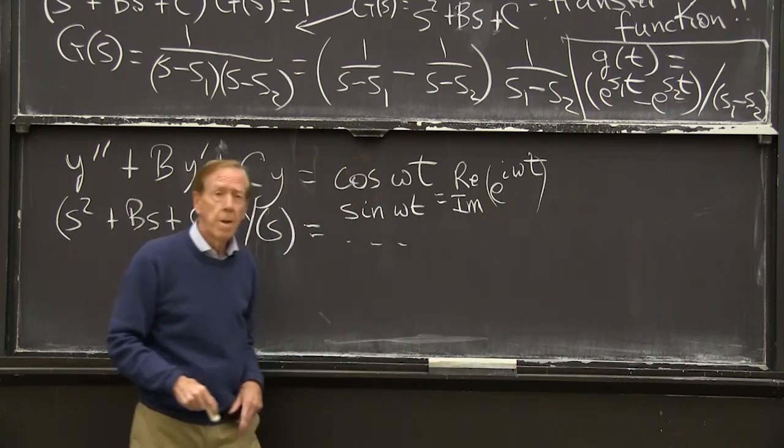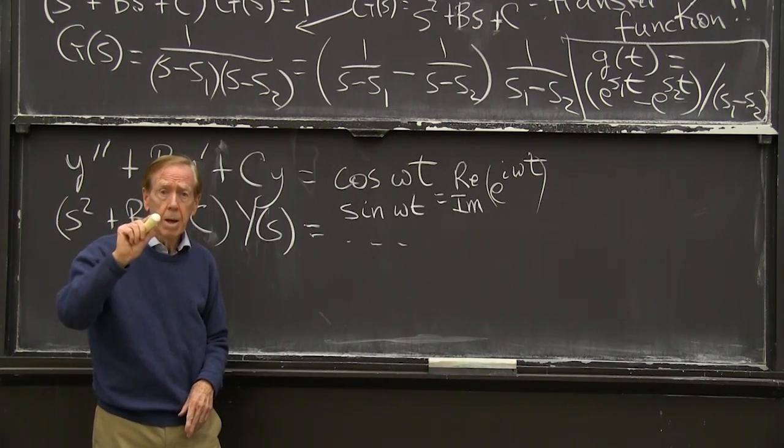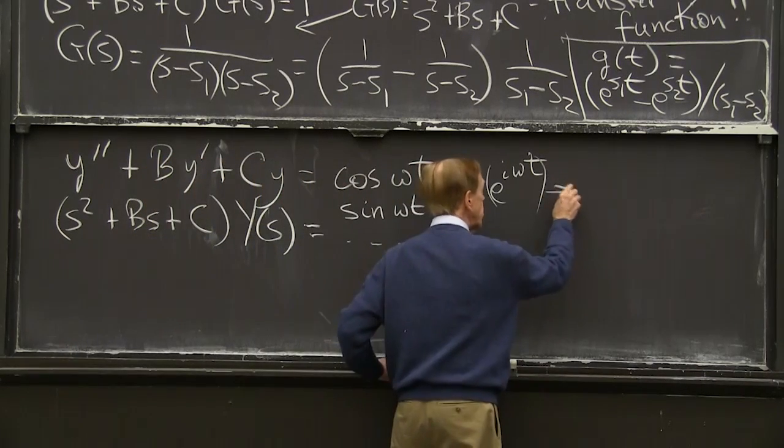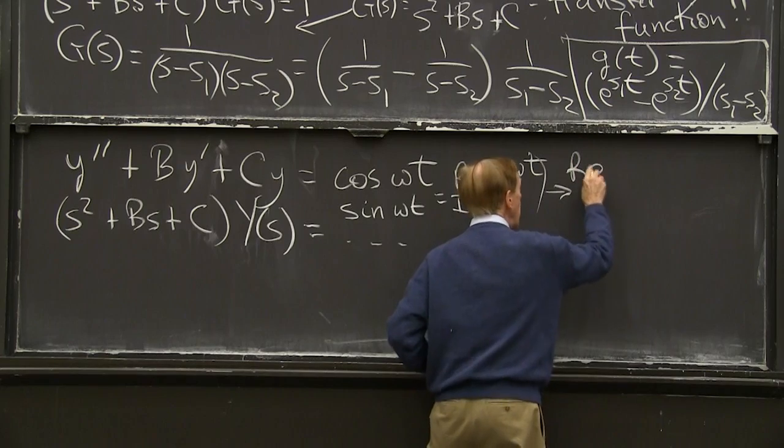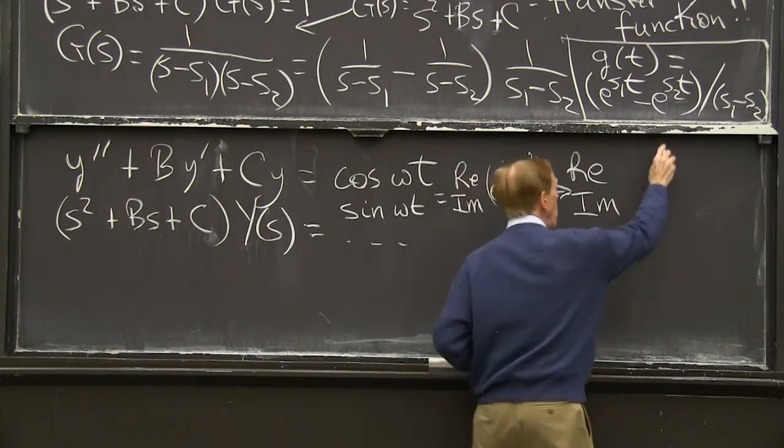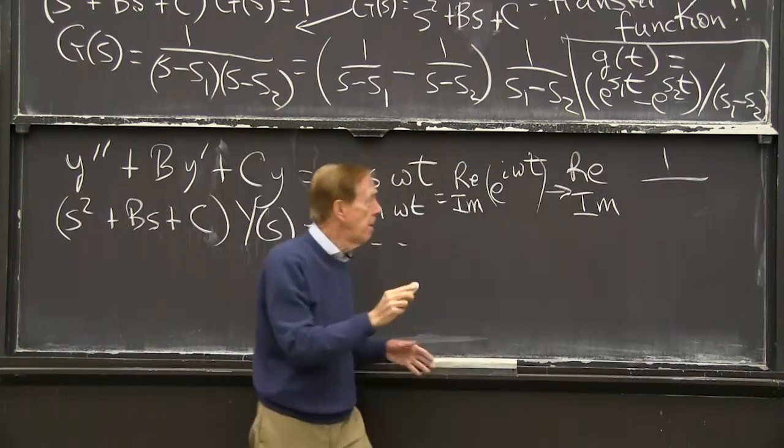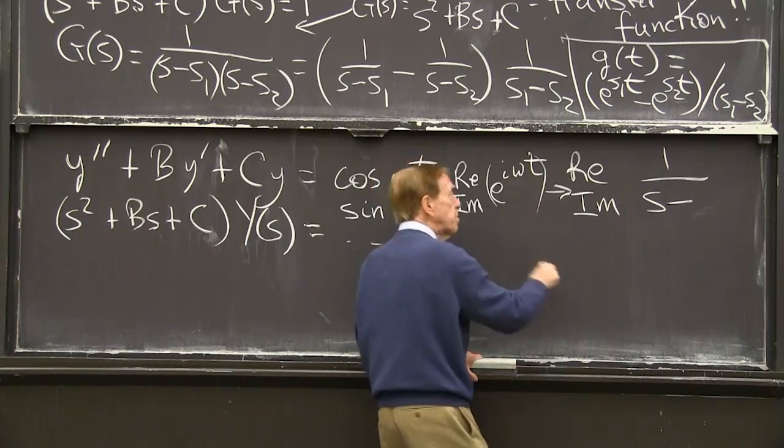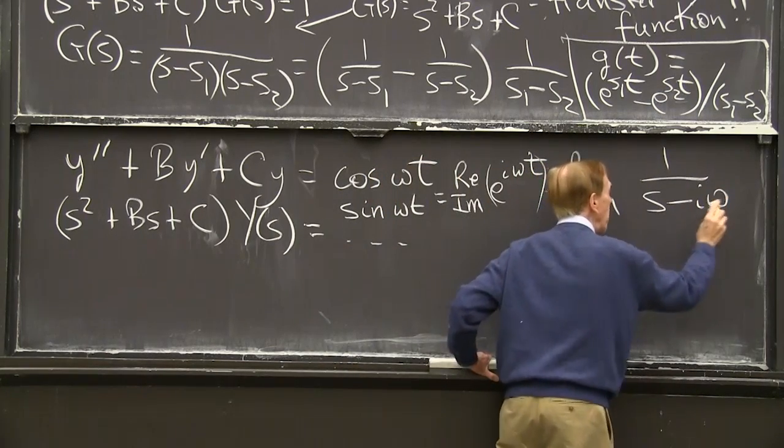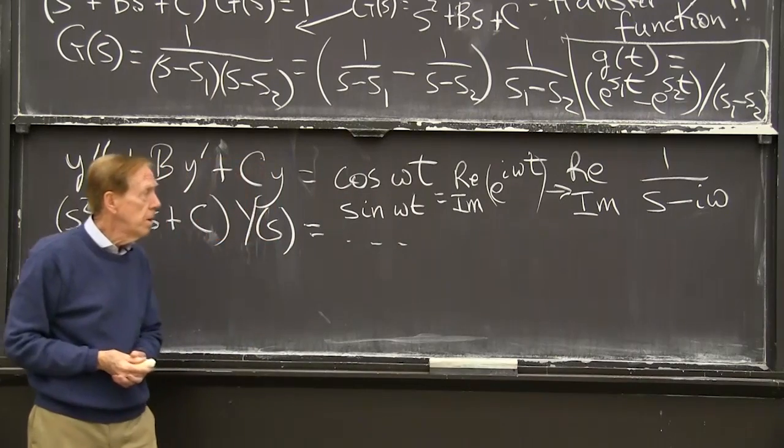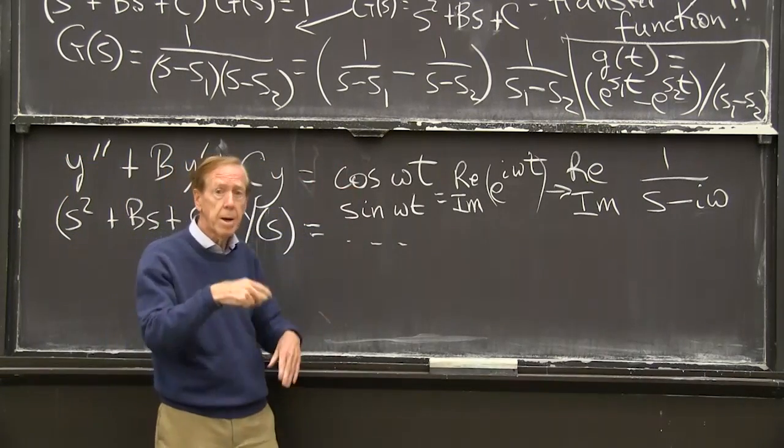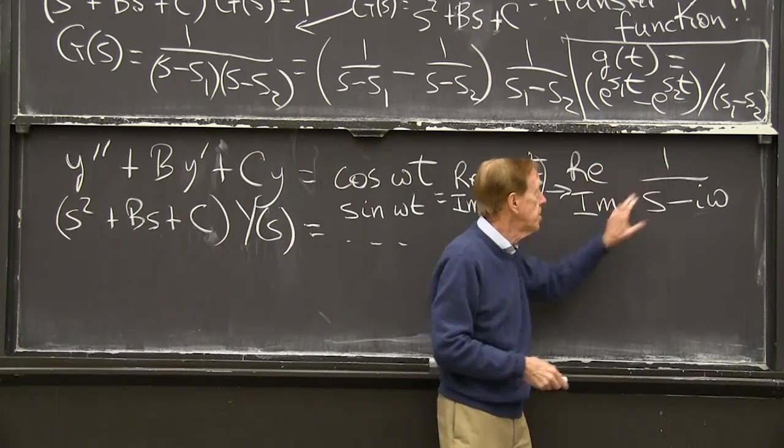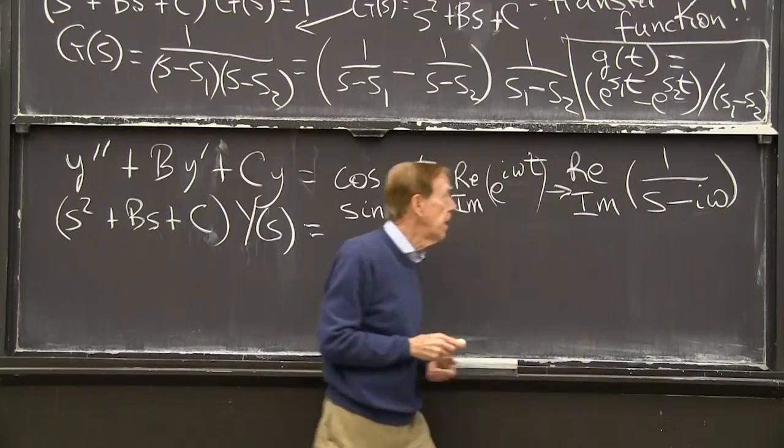But now I know the transform of e to the at, e to the i omega t. So that transforms to, so I want the real and imaginary parts of 1 over, you remember what it is, it's just that simple pole again, s minus the exponent i omega. So I'm going to get the cosine and the sine at the same time from one calculation, finding the real and imaginary parts of this 1 over s minus i omega.